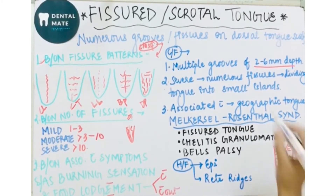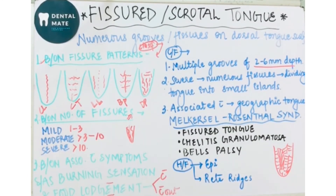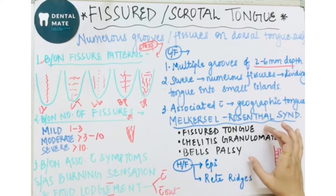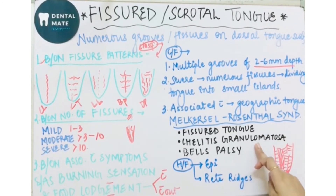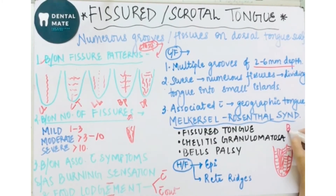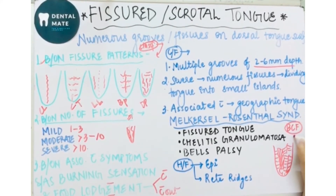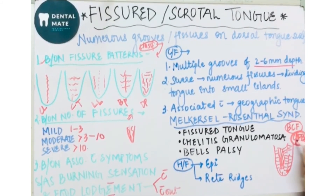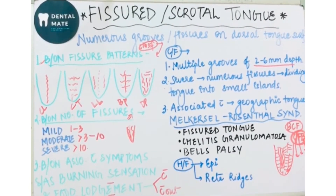Fissured tongue is also seen in association with various other conditions like geographic tongue and Melkersson-Rosenthal syndrome. Melkersson-Rosenthal syndrome has a triad of: cheilitis granulomatosa, fissured tongue, and Bell's palsy. A mnemonic to remember this: C, F, P — cheilitis granulomatosa, fissured tongue, and Bell's palsy — however you can remember it.